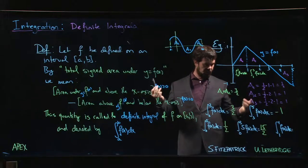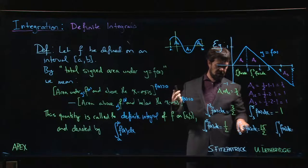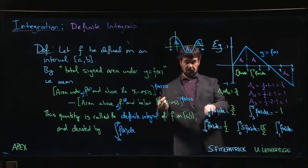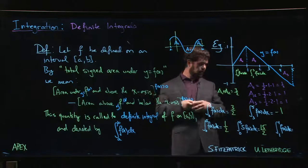And you might notice that that answer is 5 times as big as this answer. And so you might guess that there's a property here saying that if you have the integral of 5 times a function, that's the same thing as doing 5 times the integral.